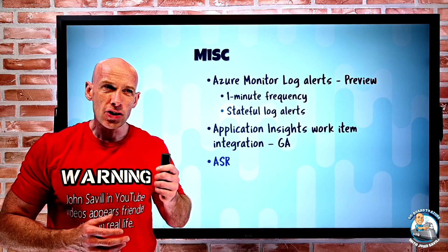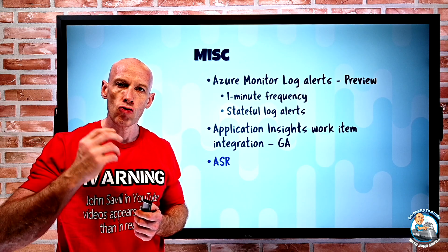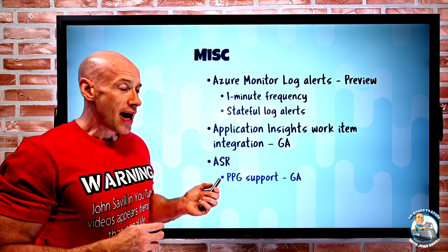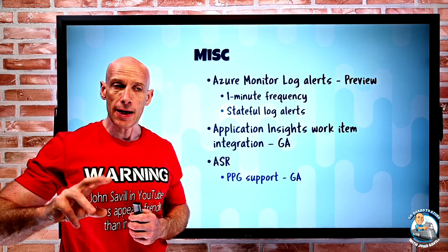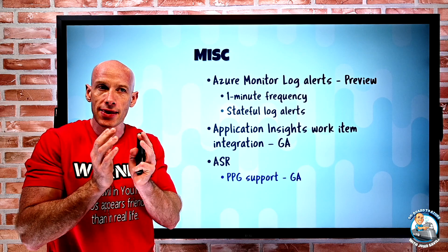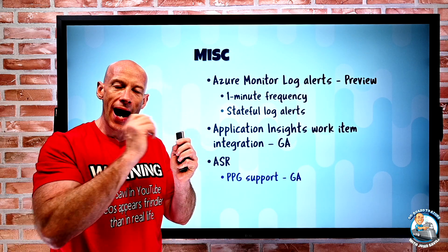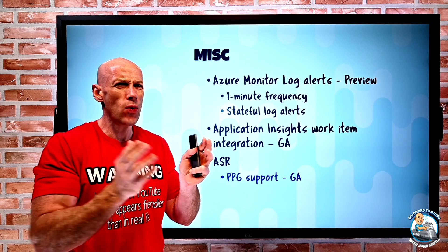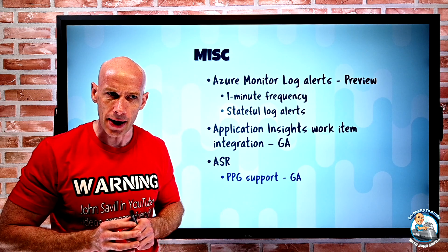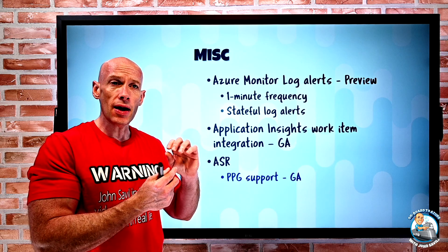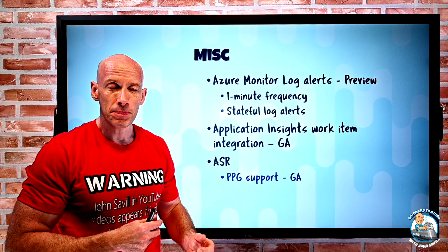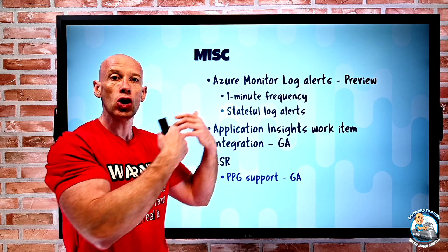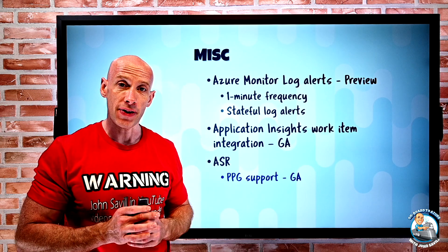Azure Site Recovery — which replicates OS instances from on-premises to Azure or Azure to Azure — now has proximity placement group support that's GA. Proximity placement groups keep things very close together in terms of latency, well below a millisecond. With Site Recovery, I can now specify a proximity placement group for failover. It's best-effort: if it can't place into the PPG it won't fail the failover, but it will try as best it can to land in the desired PPG.